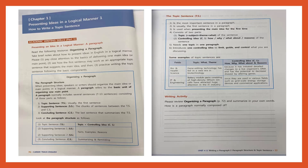Page 77, the topic sentence — TS. Let's read a few of these points. Number one: the topic sentence is the most important sentence in a paragraph. Number two: it is usually the first sentence. Number three: it is used when presenting the main idea. Number four: an effective topic sentence has the topic and also what we call a controlling idea. We'll have a look at some examples in a moment.